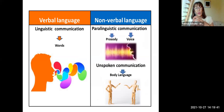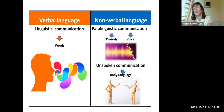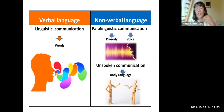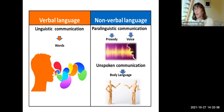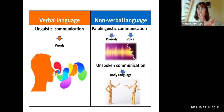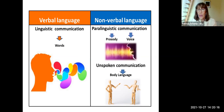What does communication include? It includes verbal language — the words we use — and at the same time these words are accompanied by nonverbal language. Nonverbal language includes paralinguistic information — prosody, rhythm, intonation, and tone of voice — and also unspoken communication, what we express through our bodies. Nonverbal language is very important because the same sequence of words may have a different meaning according to the way nonverbal language is used.